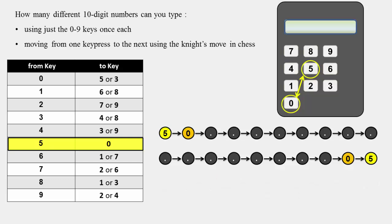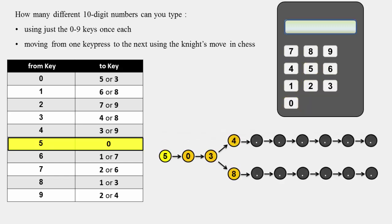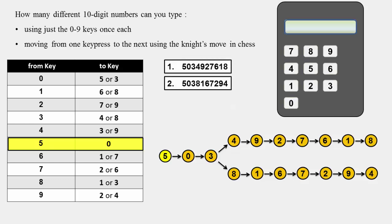Now, if the key 5 is at the start, then after moving to 0 and then 3, you'd have two possible options. From the key 3, you can move either to the key 4 or to the key 8. In each case, you get an expected 10-digit number that has all 10 unique keys typed.